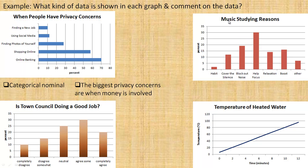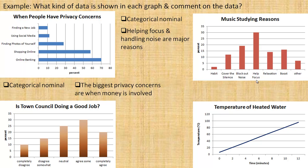The next one is about music studying reasons — reasons for listening to music while you're studying. This again is categorical nominal data. There are categories here but no particular rank or order to them. You're showing the percentage of people in each category, but the categories themselves don't have any particular order. One comment about this data is that helping focus and blocking out noise are two of the major reasons for people using music while they study.